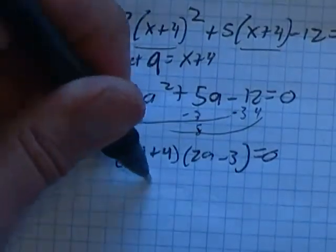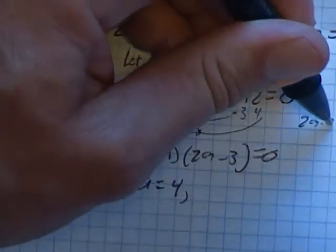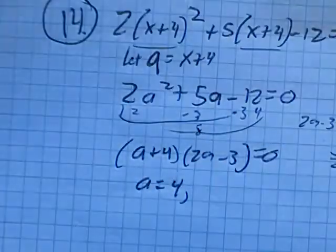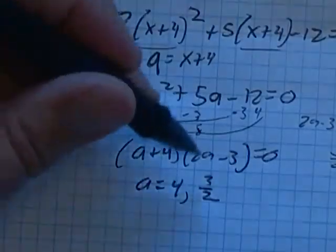Both these have to be zero. So that means a is negative four, or a is, add three, divide by two, three halves. Oh, negative four.